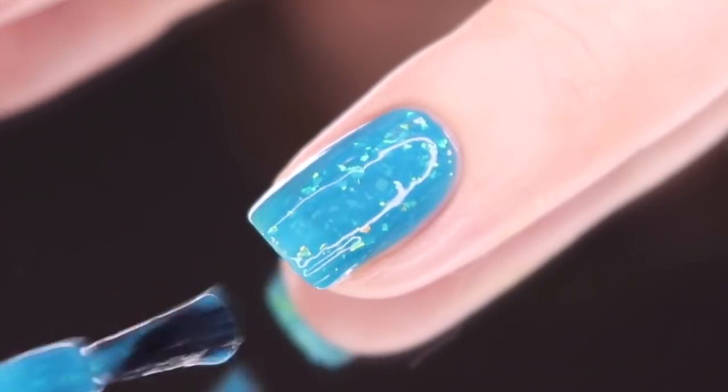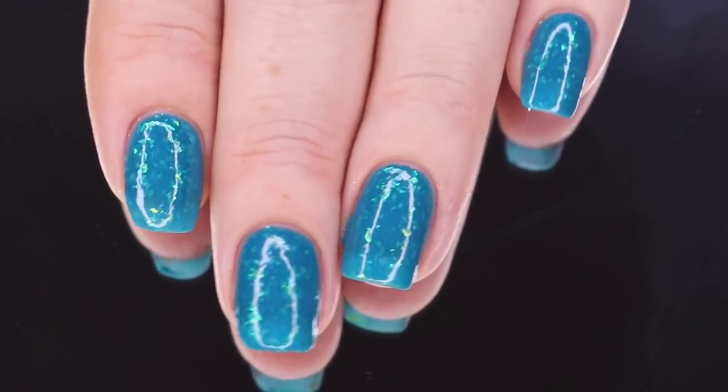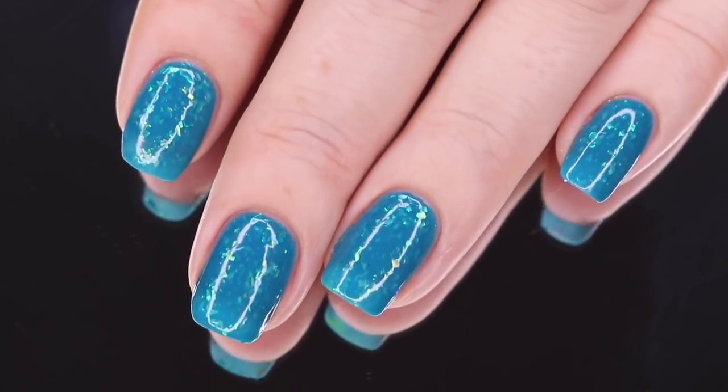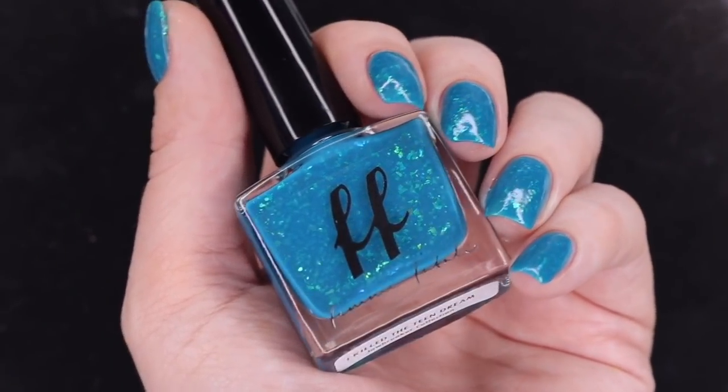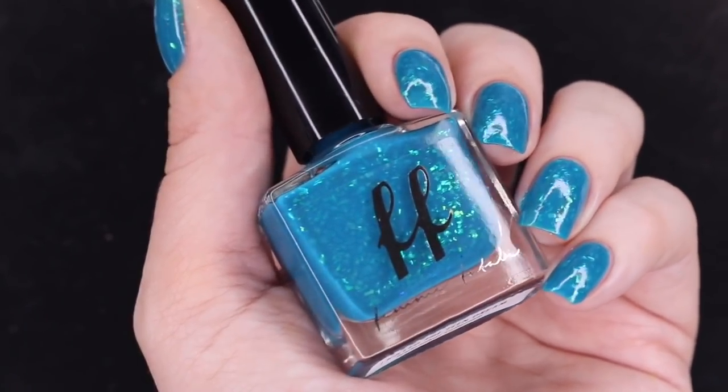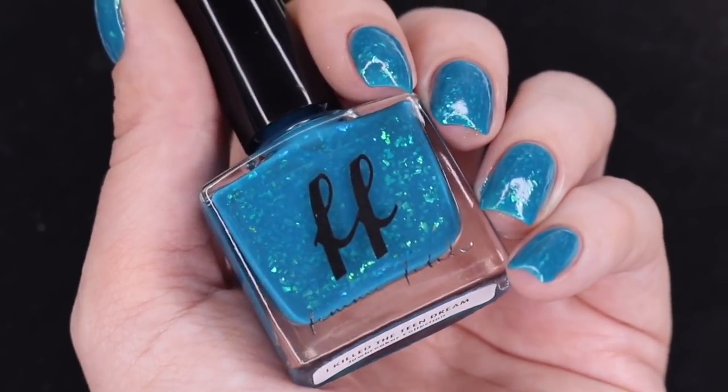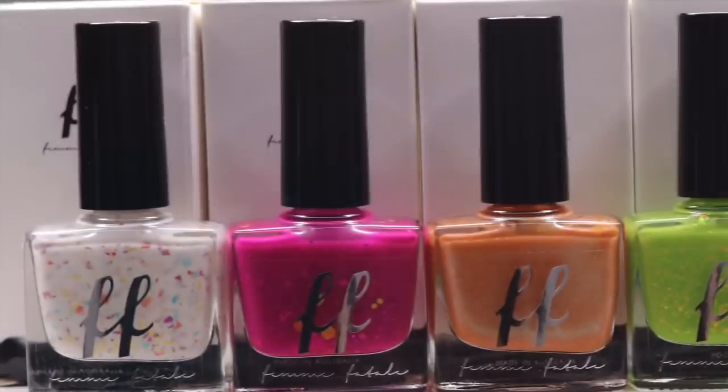I do want to say that this one did minimally stain my nail plate. It did come off with a little bit of elbow grease, but I did want to mention that. Here is a look at that completed mani at three coats before a glossy top coat underneath artificial lighting. Here is a quick view from a different angle with the bottle so you can see that color accuracy. And then this is my final swatch photo at an angle underneath that same artificial lighting.